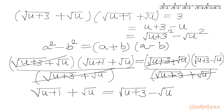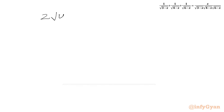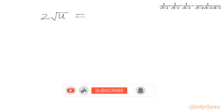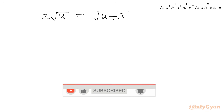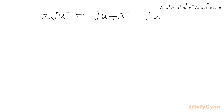Now we take minus square root u to the LHS, so it becomes 2 times square root u. And in the RHS we get square root (u plus 3) minus square root (u plus 1). So I will write: 2 times square root u equals square root (u plus 3) minus square root (u plus 1).